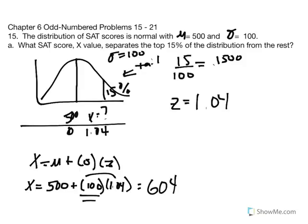A score of 604 separates the top 15% of the distribution of SAT scores. So a university may say they're only taking those who score in the top 15th percentile — meaning at a score of 604 or above.